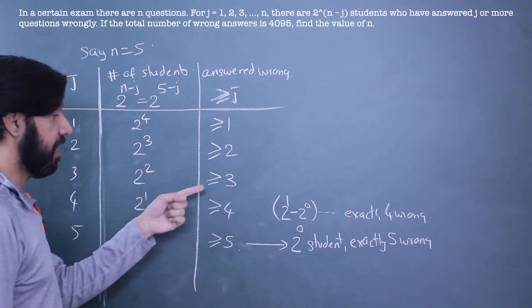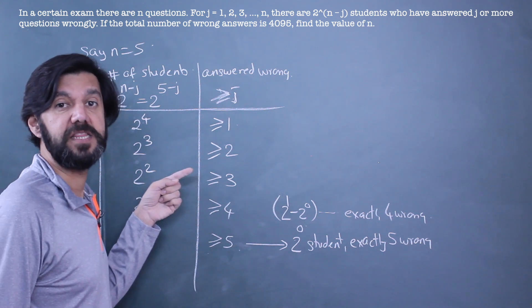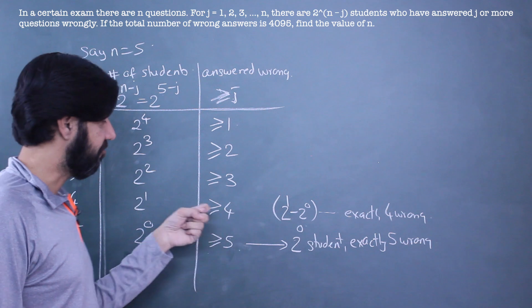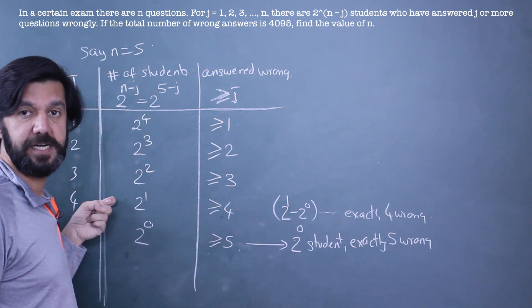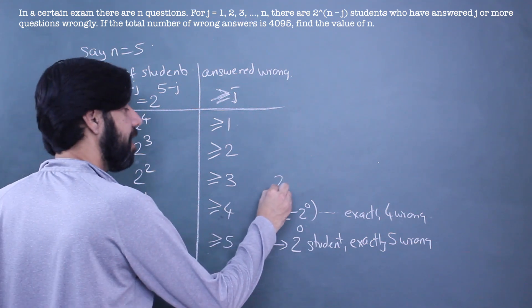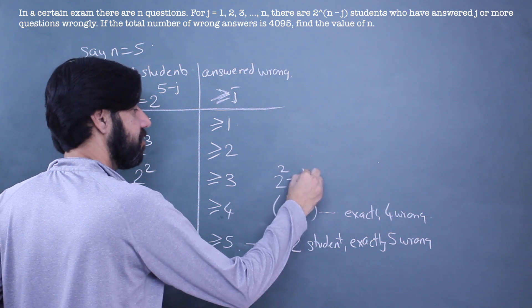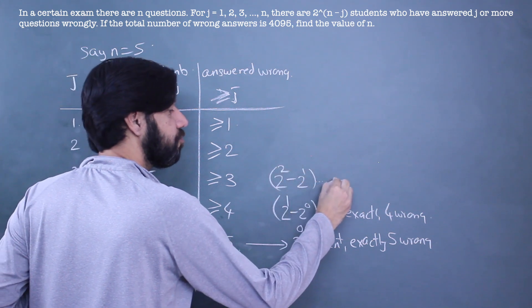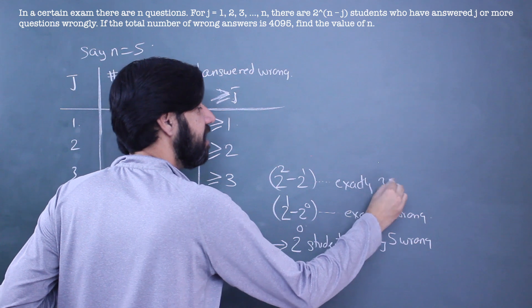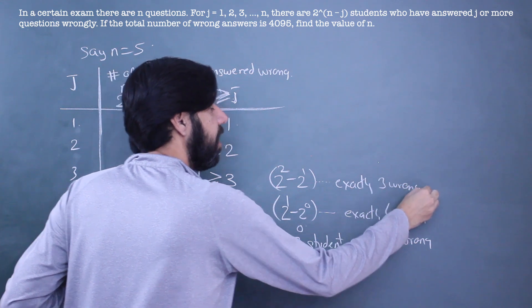Similarly, this is 3 or more than 3, 3 or 4 or 5, but 4 or 5 are already present here. So if I subtract them, I'll be getting 2^2 - 2^1. These are students who have answered exactly 3 wrong.